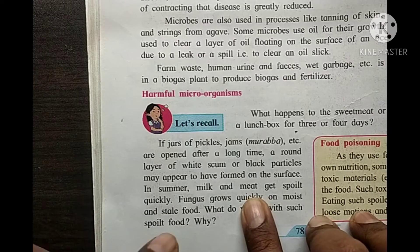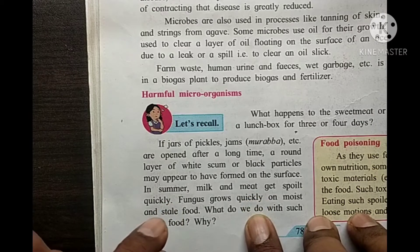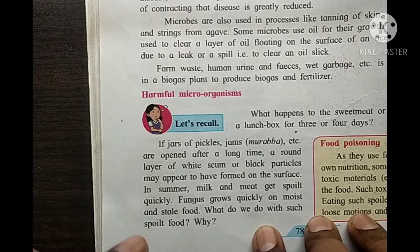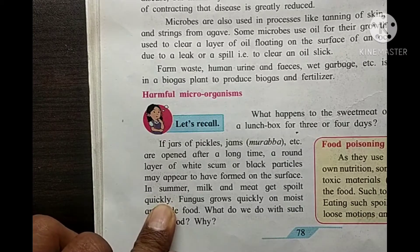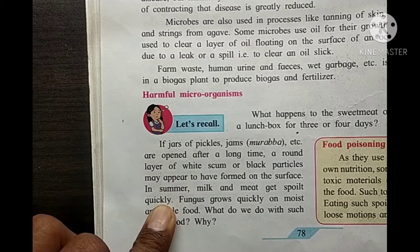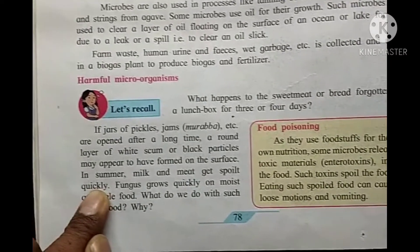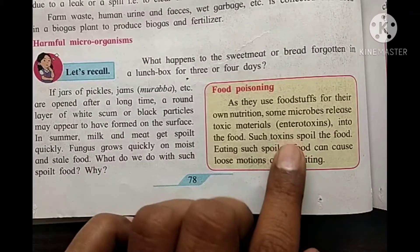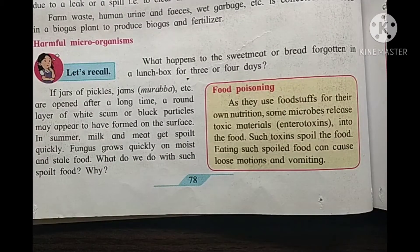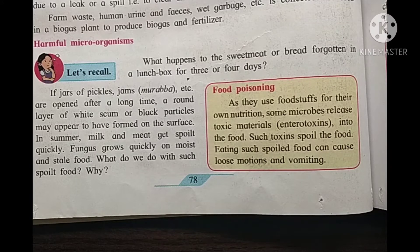Microorganisms can enter your body and release poison through spoiled food. Foodstuffs used for their own nutrition cause some microbes to release toxic material into the food. Such toxins spoil the food. Eating such spoiled food can cause nausea, loose motion, and vomiting.